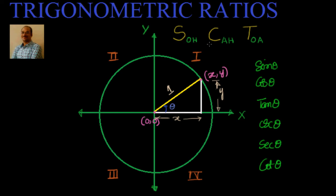We know that sin theta equals opposite by hypotenuse, cos theta equals adjacent by hypotenuse, and tangent of an angle is nothing but opposite by adjacent. If we apply those rules to this particular triangle, sin theta is nothing but opposite by hypotenuse, which is equal to y. Cos theta equals adjacent by hypotenuse, which equals x. Tangent equals opposite by adjacent, that is nothing but y by x.